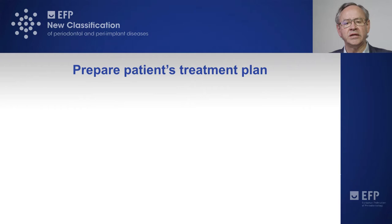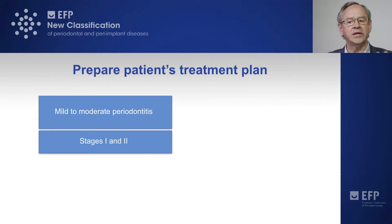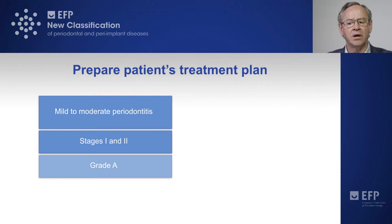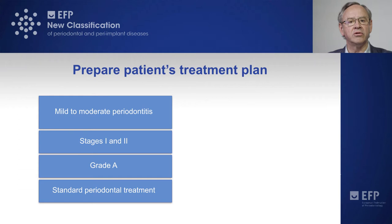Once we have clear staging and grading of our periodontitis patient, we make a diagnosis to elaborate a treatment plan. Stages one and two are those stages where the periodontitis can be termed as mild to moderate, and normally if we have a patient with grades A or even B, we can most likely be very successful doing the standard non-surgical periodontal treatment.